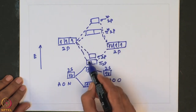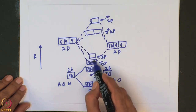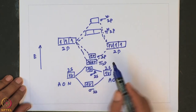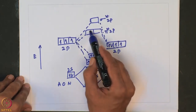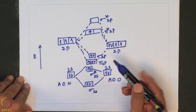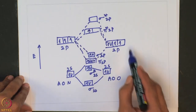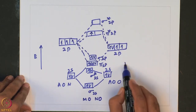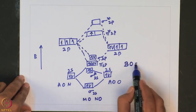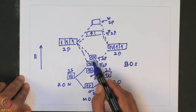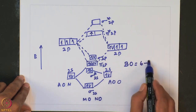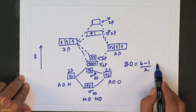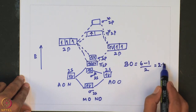Filling the 7 electrons into the MO diagram: the 2S-derived sigma and sigma-star are filled (4 electrons), and the remaining 3 electrons go into the 2P-derived orbitals. Two fill the pi bonding orbitals and the last one goes into the pi-star anti-bonding orbital. The bond order of NO is (6 − 1)/2 = 2.5.